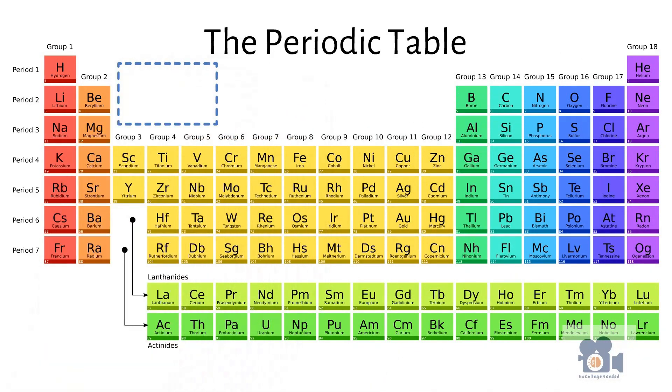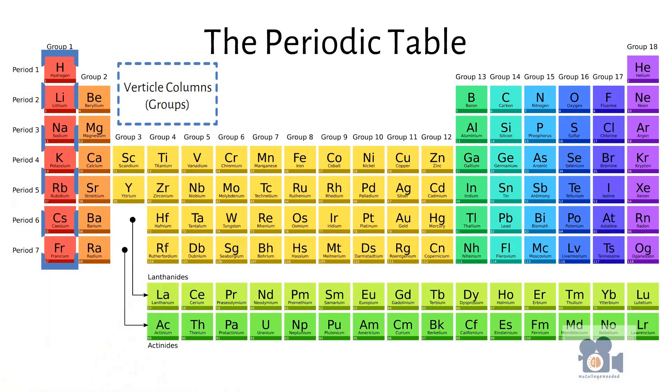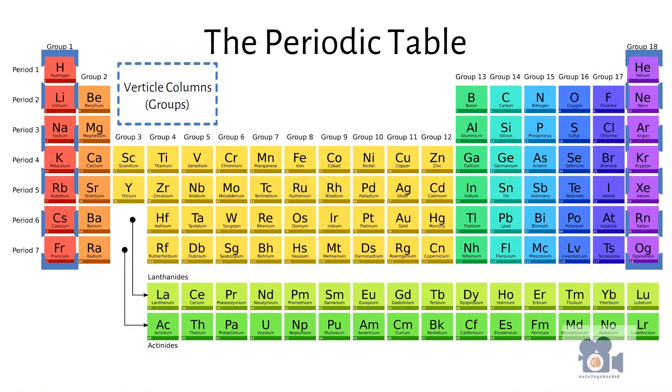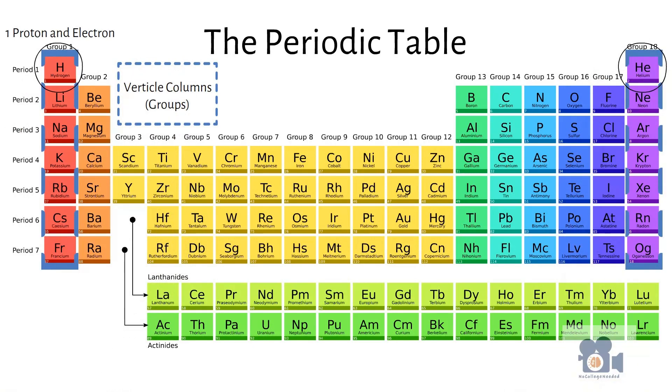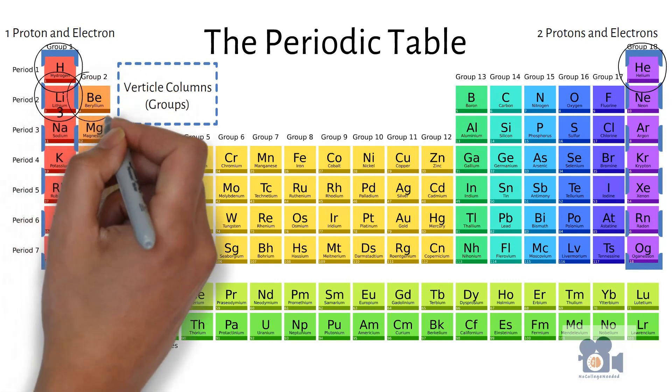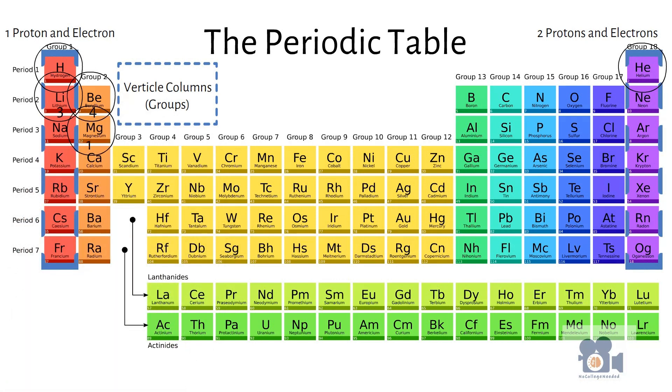The vertical columns called groups are labeled somewhat arbitrarily, but as you go from group to group, there is one additional proton and electron in the atom. This can get somewhat tricky to keep track of with the layout of the periodic table. For example, hydrogen has one proton and electron, while helium has two protons and electrons. Lithium has three protons and electrons, beryllium has four protons and electrons, and magnesium has 12 protons and electrons.